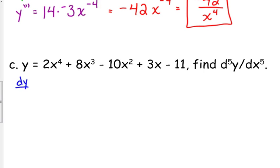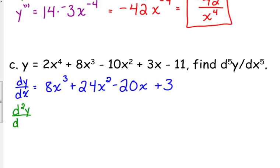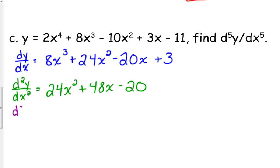So dy over dx, and I'm going to kind of do multiple steps in one. I think we can handle that with polynomials. The derivative would be 8x cubed plus 24x squared minus 20x plus 3. I just didn't show all the intermediate steps there. So d squared y over dx squared, the second derivative of y with respect to x is 24x squared plus 48x minus 20. The third derivative of y with respect to x is 48x plus 48.